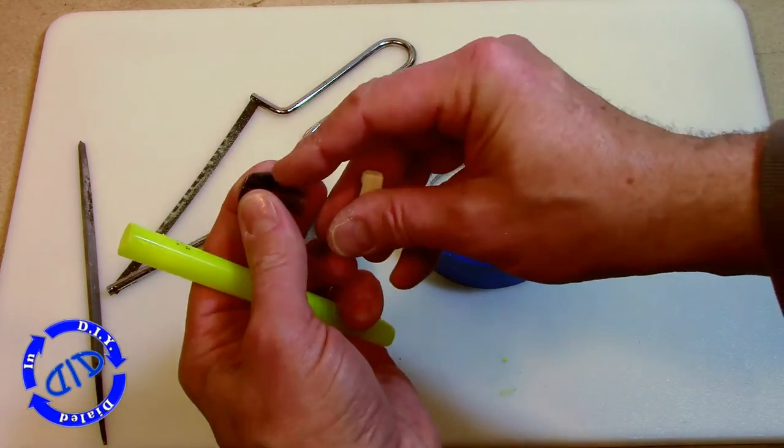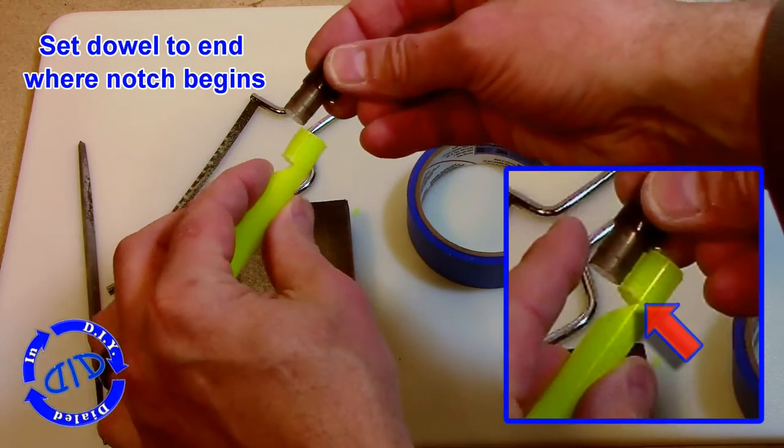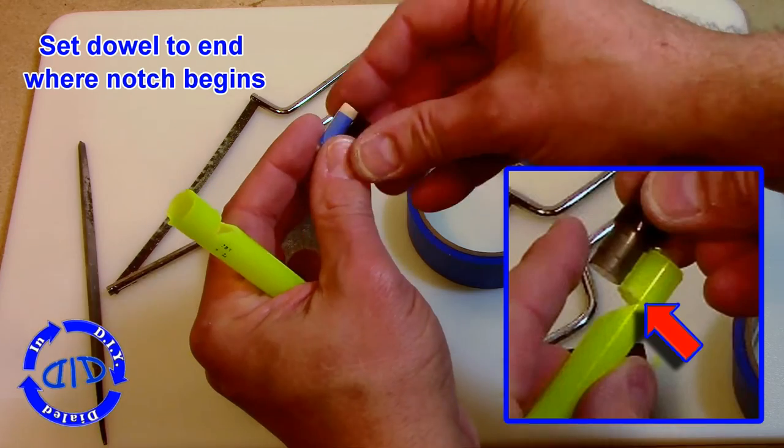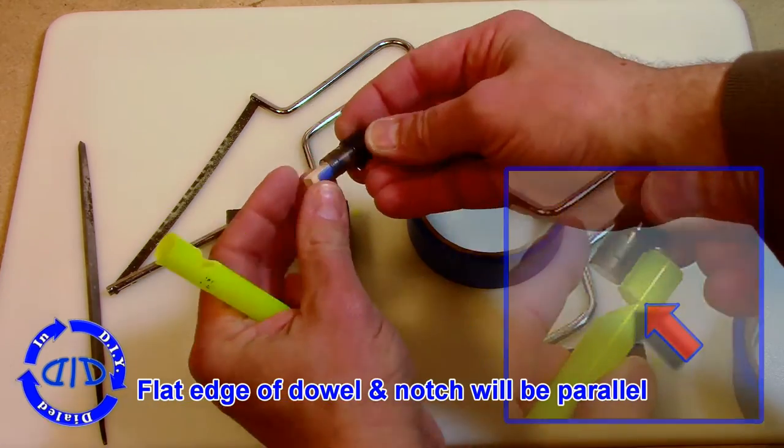I sanded this one just a little too much so I put a piece of tape on the rounded edge and it fits snug again. The correct position for the dowel is to come just up to that notch where it begins so that they are parallel.